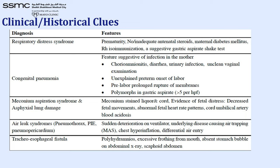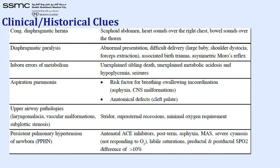Tracheoesophageal fistula presents with history of polyhydramnios, excessive frothing from the mouth, absent stomach bubble on chest X-ray, and scaphoid abdomen. Congenital diaphragmatic hernia also presents with scaphoid abdomen and hypoxia due to lung hypoplasia. Diaphragmatic paralysis shows abnormal chest movement. Inborn errors of metabolism may present with unexplained sibling death, unexplained metabolic acidosis, hypoglycemia, and seizures. Aspiration pneumonia risk factors include swallowing incoordination, anatomical defects like cleft palate, upper airway pathologies, and persistent pulmonary hypertension.